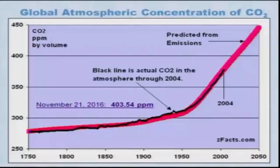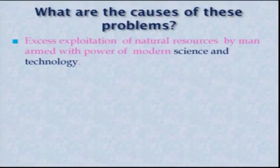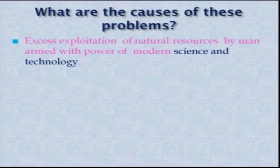One has to be very careful about that. All these things we are doing because of the power we have got from modern technology and science, and we are misusing and abusing it. The cause of this problem is basically excess exploitation of natural resources by man armed with the power of modern science and technology. But is this the only cause, or are there any other causes?